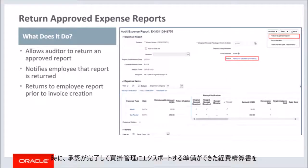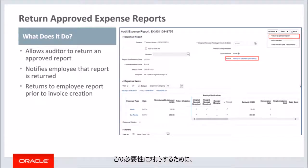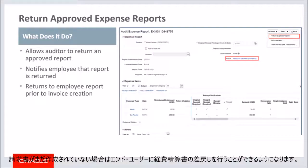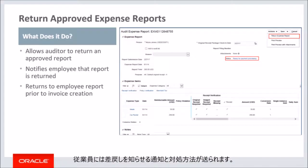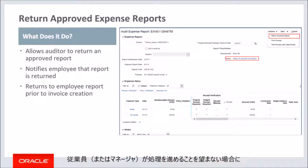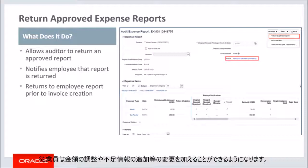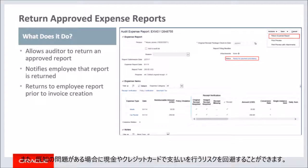Occasionally, circumstances require that an expense report that is approved and ready to be exported to accounts payable be returned to the end user. Expense auditors will have the ability to return an expense report to the end user during the window where manager and auditor approvals are complete, yet an invoice has not yet been created. When this occurs, a notification is sent to the employee alerting them to this action along with recommendations on how to proceed. This prevents export of the expense report to AP, and the employee can make modifications such as adjusting an amount or adding missing information, avoiding the risk of making a cash or credit card payment when there is a known issue.